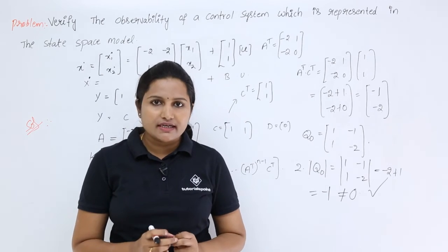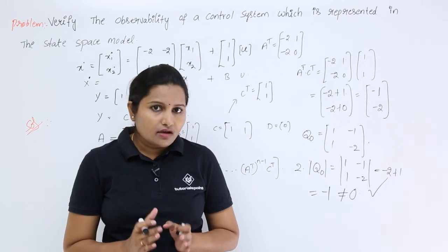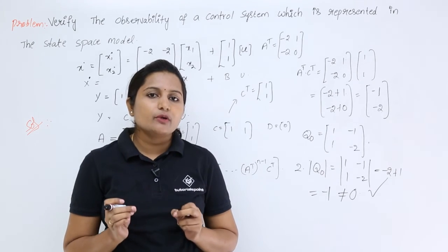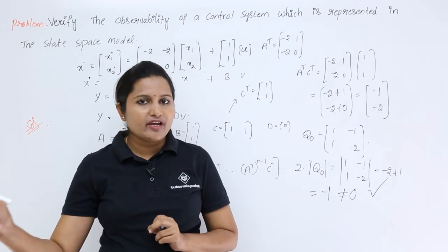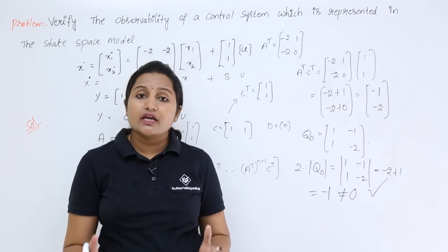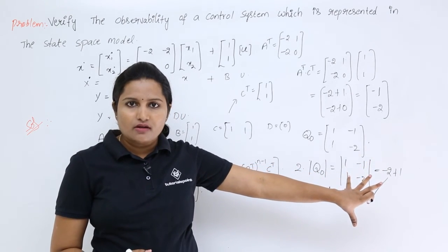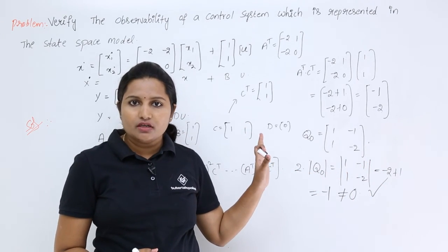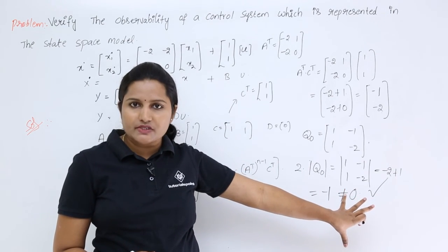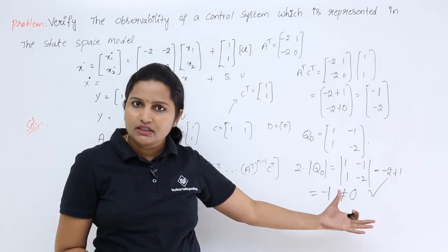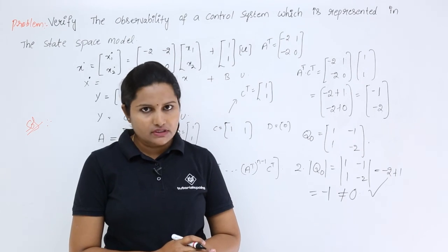The system given by the state model is observable. Observable means that you are able to determine the initial state of the system just by observing the output. By applying Kalman's test to the given state model, we conclude the system is observable — by observing the output, you can estimate the initial state of your system.